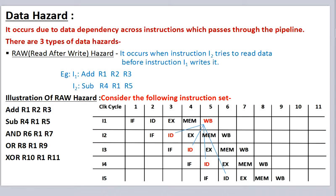The first one is read after write hazard. It occurs when a second instruction tries to read data before the first instruction writes it. For example, suppose we have two instructions: ADD r1, r2, r3 and SUBTRACT r4, r1, r5. In the first instruction the value is to be written on r1, and in the second instruction the value is to be read from r1. So this hazard happens when the second instruction tries to read the data before the first instruction writes it.